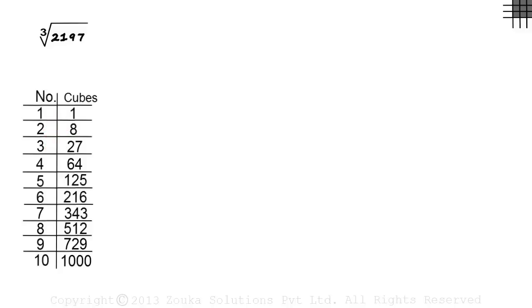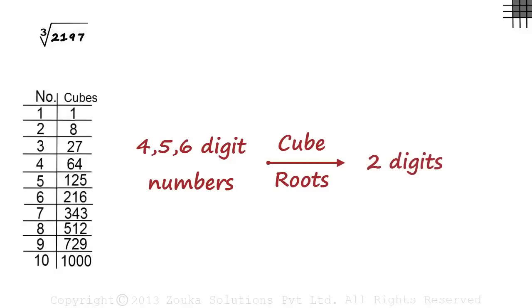Second, we should know that for 4, 5 and 6 digit numbers, their cube roots will always be 2 digits long.